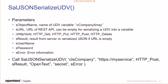You pass in the name of a UDV, like c-company-array, then the URL of the JSON web service. You have one parameter for the HTTP type you want to use — GET, PUT, POST, or DELETE. You get back a result from the server, which in many cases is a serialized JSON as well.